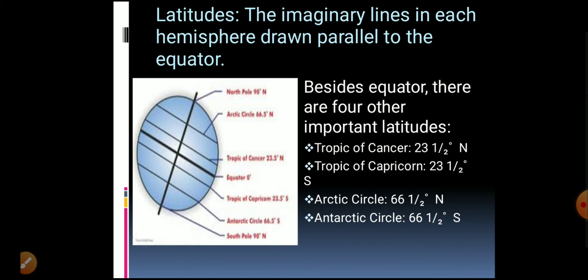The Tropic of Cancer is situated at 23.5 degrees north. The Tropic of Capricorn is situated at 23.5 degrees south. The Arctic Circle is situated at 66.5 degrees north, whereas the Antarctic Circle is situated at 66.5 degrees south.